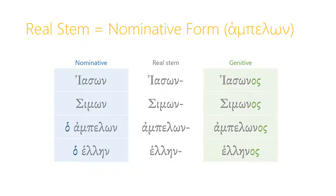Similarly, Simon — the real stem is just the nominative form, Simon, and you add the endings onto that real stem, so the genitive is Simonos. Similarly for Amphilon, the genitive is Amphilonos, and for Helene, the genitive form is Helenos.